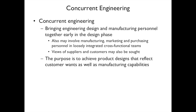Concurrent engineering is an approach where you bring both the engineering design team and manufacturing people together early in the design process. The traditional way is engineering designs something and then decides whether it can be manufactured. Concurrent engineering may also bring in marketing and purchasing into a cross-functional team, and sometimes even includes suppliers and customers. For example, cup holders in cars were first introduced because of customer involvement. By doing concurrent engineering you get designs that reflect customer wants and make manufacturing easier.